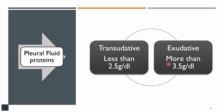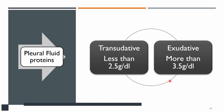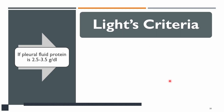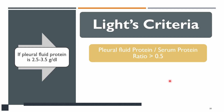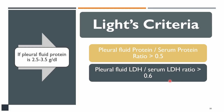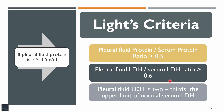Pleural effusion is transudative if protein is less than 2.5 g/dL, or exudative if more than 3.5 g/dL. If it is between 2.5 and 3.5, the more accurate method is Light's criteria, which has three points: pleural fluid protein to serum protein ratio more than 0.5; pleural fluid LDH to serum LDH ratio more than 0.6; and pleural fluid LDH more than two-thirds the upper limit of normal. If any one of these criteria is met, the effusion is exudative. If none are fulfilled, the effusion is transudative.